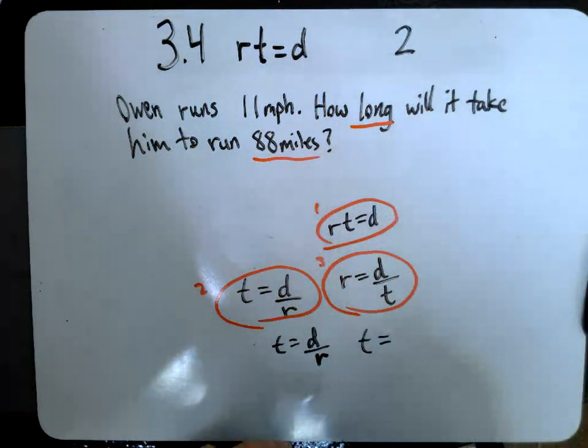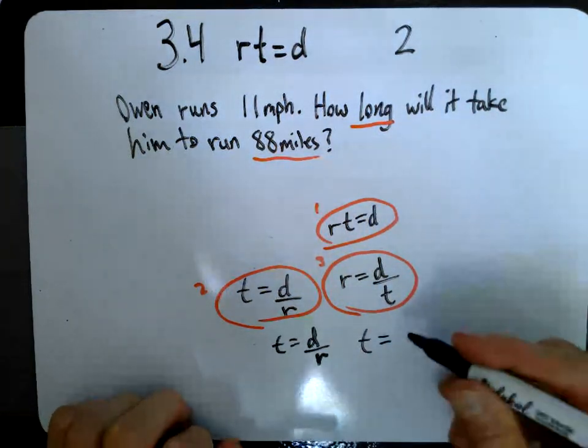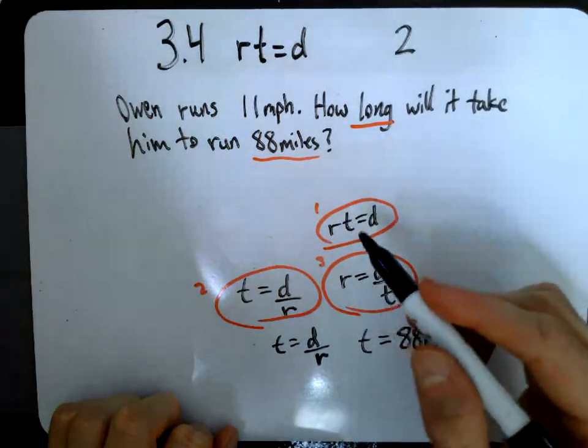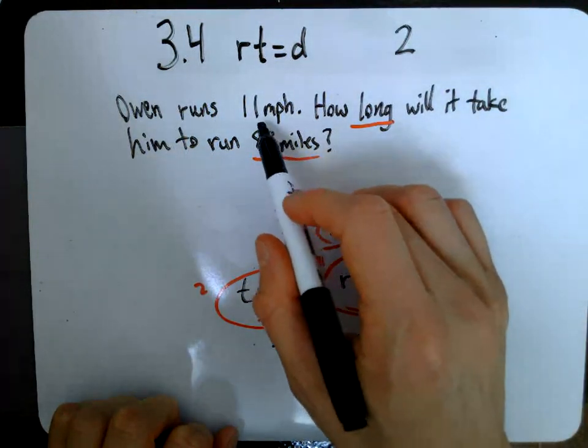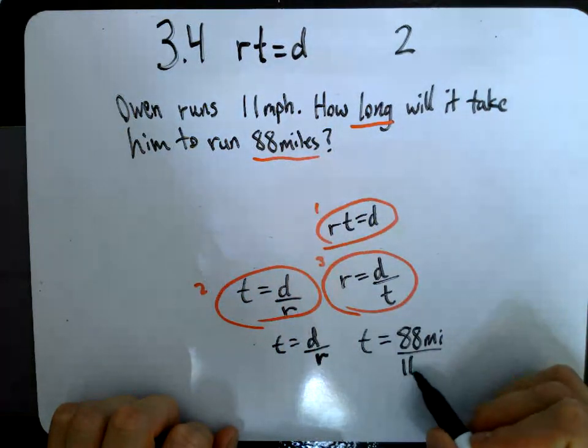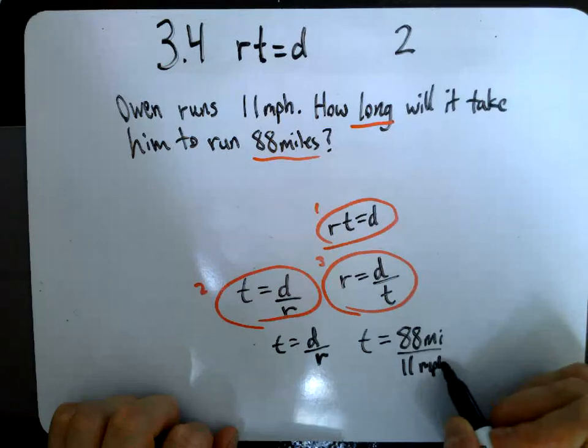It's 88 miles. All right, so I'm going to put 88 miles. And then I'm going to divide that by R, my rate. Rate is another word for speed, right? So I have 11 miles per hour.